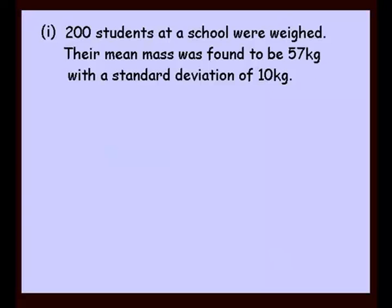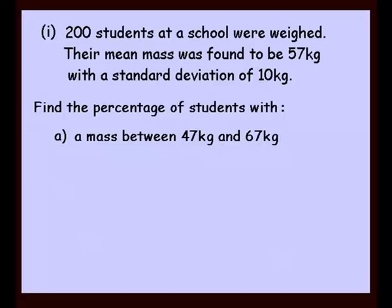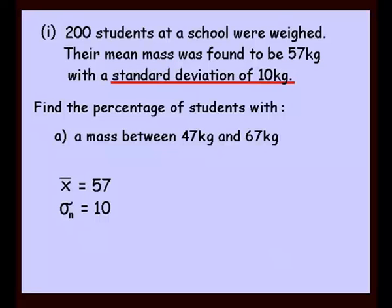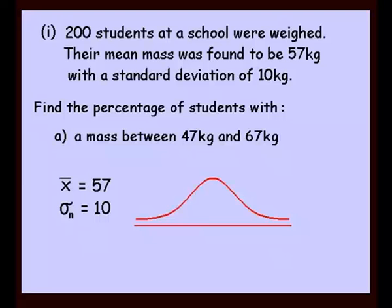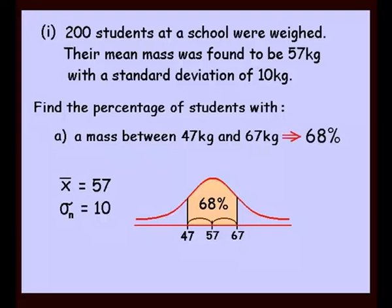First example: 200 students at a school were weighed. Their mean mass was 57 kilograms with a standard deviation of 10 kilograms. We're asked to find the percentage of students with a mass between 47 and 67 kilos. Drawing our bell curve with 57 in the middle, adding 10 gives 67 and subtracting 10 gives 47. We've gone up and down one standard deviation, so our result is 68% of students weigh somewhere between 47 and 67 kilos.